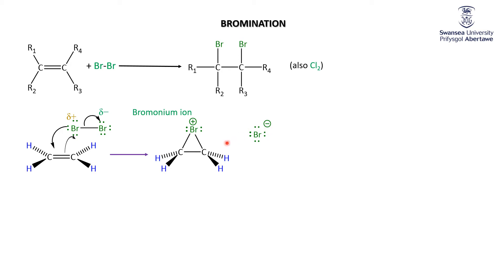So the net result is this fascinating bromonium ion, plus the very boring bromide anion. Let's make sure we see where this has come from. We started off with the pi cloud — the electrons in the pi cloud get attracted to the slightly positive bromine and make a bond. That bromine therefore tells the other bromine to get lost, giving us the bromide. What's new is that the bromine lone pair comes in and makes a bond with the other carbon, so the bromine bonds to both carbons.